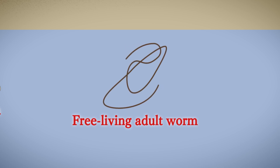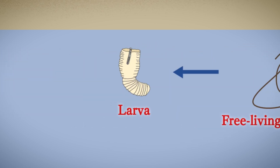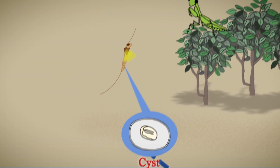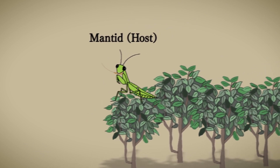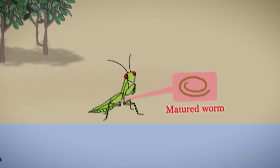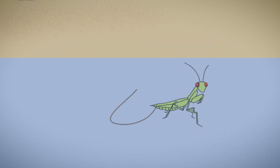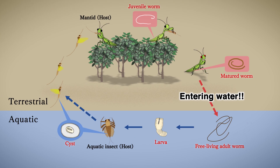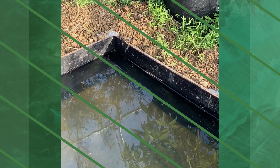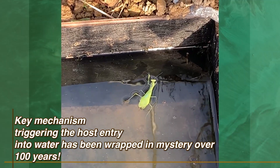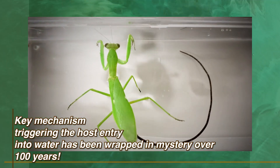Hairworms have a complex life cycle. When the hairworms fully mature inside of their terrestrial insect hosts, they induce their hosts to enter streams or ponds. This is one of the most fascinating examples of host manipulation by a parasite. But the key mechanism triggering the host entry into water has long been wrapped in mystery.